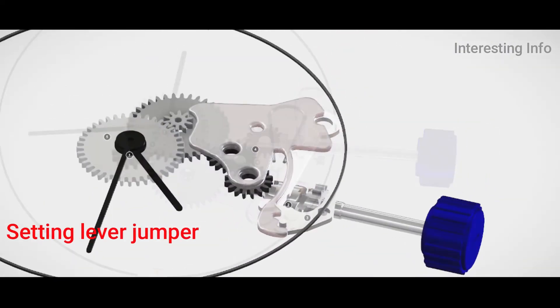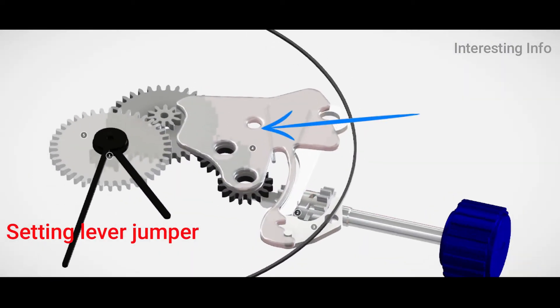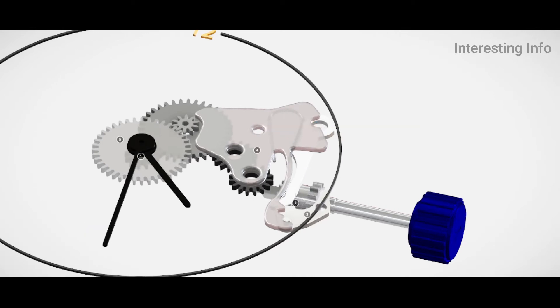Number 4: Setting Lever Jumper. Setting jumper and lever, two components that combine to form a mechanism that requires the crown to be pulled out before manipulation.